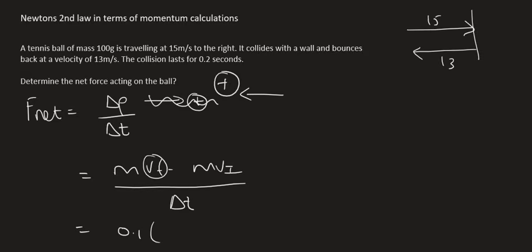So the mass is 0.1. The final velocity. Well the final velocity is 13 and it's going to the left. So that stays positive. Then you always put a negative in between irrespective of your choice direction. That's how the formula works.